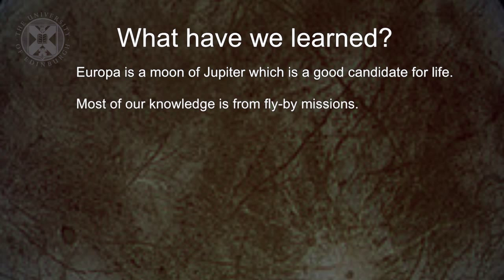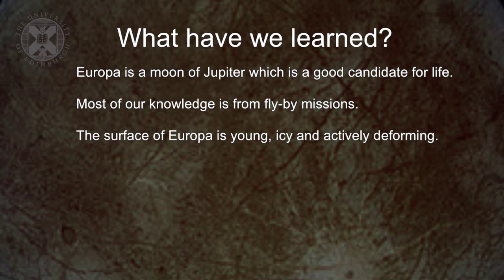Most of our knowledge of the moon is from flyby missions. The surface of Europa is young, it's icy, and it's actively deforming. Europa gains its heat from tidal interactions that cause the buckling of the moon, generating heat, and thus melting that ice and contributing to the formation of that deep European ocean.